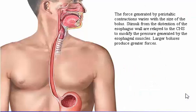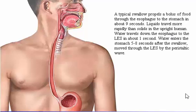The force generated by peristaltic contractions varies with the size of the bolus. Stimuli from distention of the esophagus wall, relayed to the central nervous system, modify the pressure generated by the esophageal muscles; larger boluses produce greater forces. A typical swallow propels a bolus of food through the esophagus to the stomach in about 9 seconds. Liquids travel more rapidly than solids in the upright human. Water travels down the esophagus to the lower esophageal sphincter in about 1 second, and enters the stomach 5 to 8 seconds after the swallow.